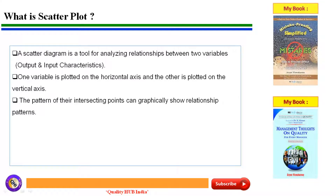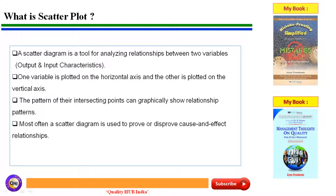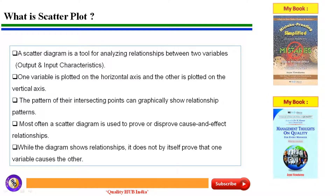The pattern of their intersecting points can graphically show relationship patterns, and we usually get various kinds of relationships. Most often, a scatter diagram is used to prove or disprove cause-and-effect relationships between variables, while the diagram shows the relationship but does not by itself prove that one variable causes the other.